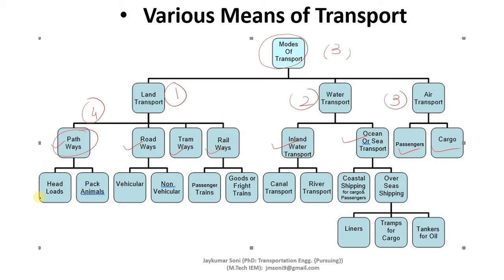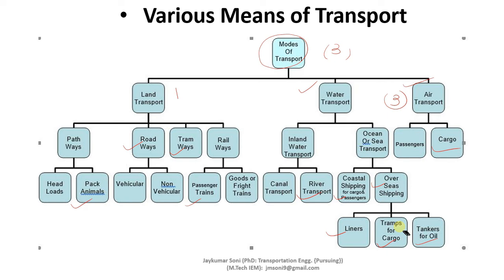Pathways are divided into 2 categories: head loads and pack animals. Roadways can be divided into vehicular roadways and non-vehicular roadways. Railways are divided into passenger trains and freight trains. Inland waterways can be divided into canal transport and river transport. Ocean transport can be divided into coastal shipping and overseas shipping, and overseas shipping can be divided into liners, tramps, and tankers.